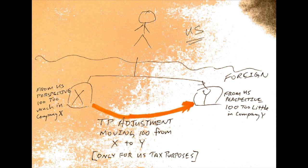Now assume that the IRS, for whatever reason, looks at the income and transactions between X and Y and determines, for example, there's been a sale of products from X to Y and the price is 100 too high. That means there's 100 too much income in X and 100 too little income in Y. So the IRS makes a transfer pricing adjustment and adjusts the pricing, which causes 100 of additional income in Y and 100 less income in X.